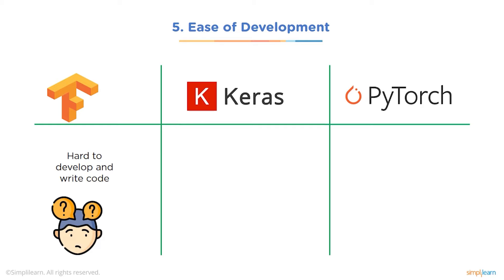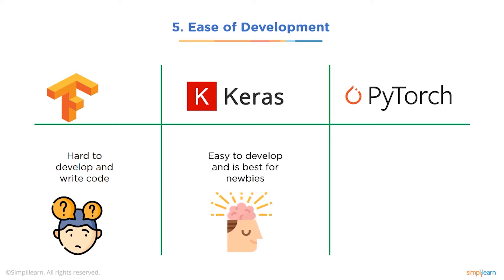Next is ease of development. TensorFlow works with hard concepts such as computational graphs and tensors, making it difficult to write code. It is generally used by researchers who need very specific functionalities. Keras provides a high level of abstraction making it very easy to use — it is best for people just starting out with Python and machine learning. PyTorch is easier than TensorFlow but still harder than Keras; it is more powerful than plain Keras but not easy for beginners.